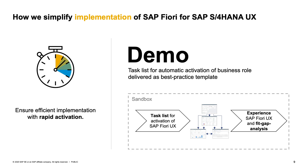After we have seen how to do scoping and selected two business roles, let's take a look at how to activate those roles in a sandbox system. For this, we offer task lists for rapid activation, which quickly activates the corresponding business roles and even generates corresponding test users, so you can directly start testing in the system and use this as a basis for your fit gap analysis.